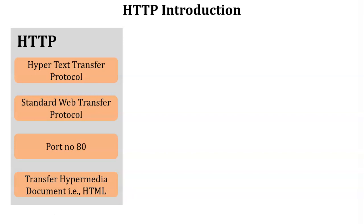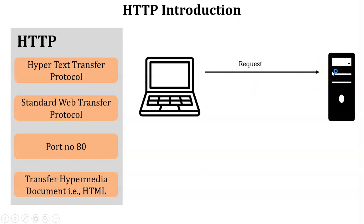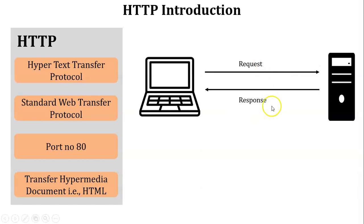The working of HTTP is based on request-response behavior. For example, there is one client and one server. The client wants to access a file from the server, so first the client makes a request to the server for particular information or a file. The server reads the request and sends the requested file to the client — this is called the response. So this is known as request-response behavior.